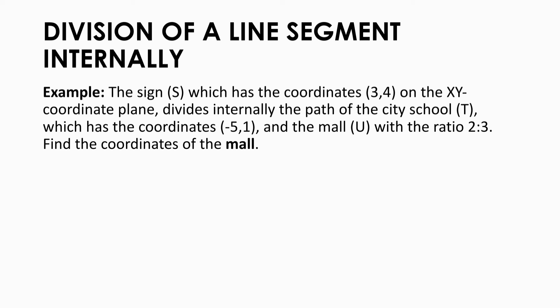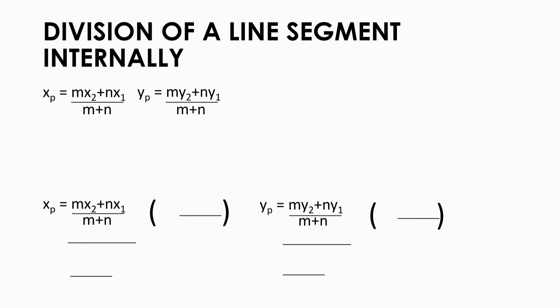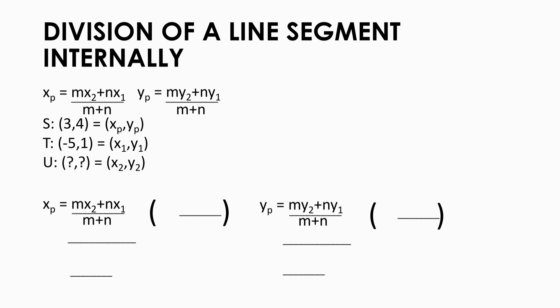The sign or point S, which has the coordinates (positive 3, positive 4), divides internally the path between the city school or point P with coordinates (negative 5, positive 1) and the mall or point U, with the ratio of 2 to 3. Find the coordinates of the mall. Let's identify which is which: the sign is x sub p, y sub p with coordinates (positive 3, positive 4); the school is x sub 1, y sub 1 with coordinates (negative 5, positive 1); and the mall with unknown coordinates is x sub 2, y sub 2.